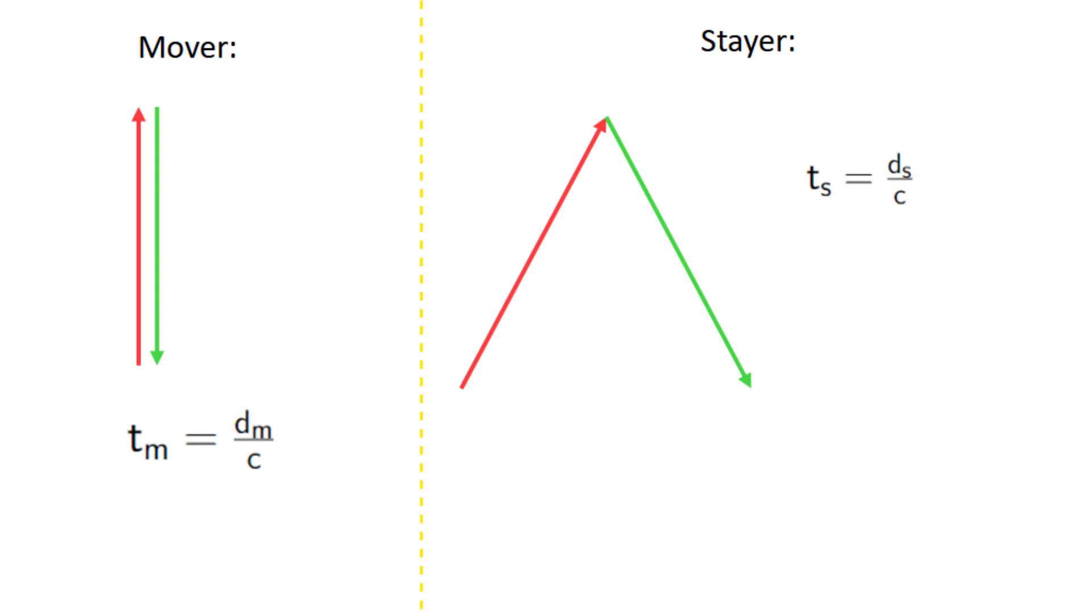dm is really easy, because the path it takes is just a straight line. It covers the length of the ship L twice, so dm equals 2L.